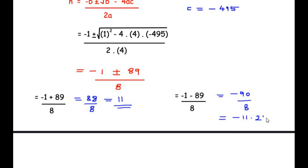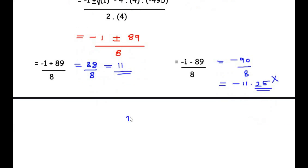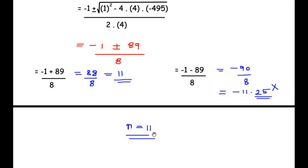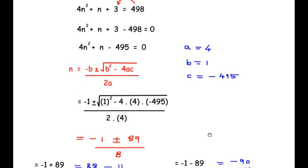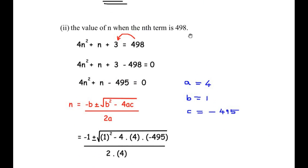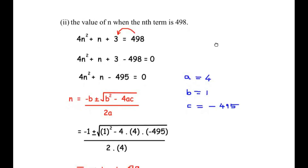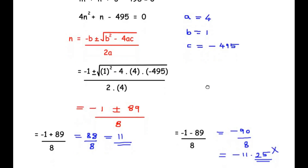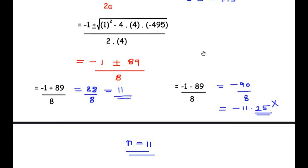Since the value of n must be a positive integer, we discard −11.25 and take n = 11. This means when n equals 11, the nth term is 498. I hope you understood all the steps. If you know another way of solving this example, do comment below. If you are enjoying my videos, please like, share, and subscribe — thank you for watching.